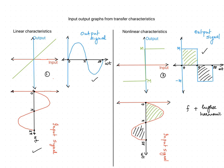Coming to the non-linear transfer characteristics, it can be seen that it is an on-off relay type. For positive values of input, the output will be a positive constant, and for negative values of input, the output will be a negative constant. So if you give a sine wave as the input, for positive values of input the output is a positive constant, and for negative values it is a negative constant. If you look at the output of the non-linear element, we can see that it is no longer a sine wave — it is a complex wave.